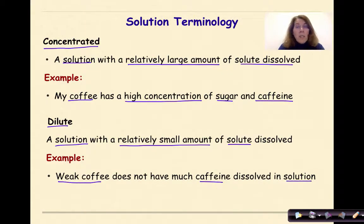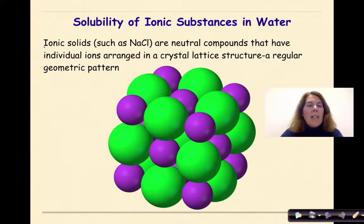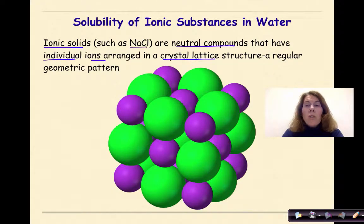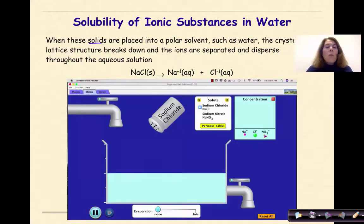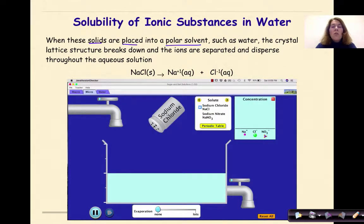Ionic solids such as sodium chloride are neutral compounds with individual ions arranged in a crystal lattice structure — a regular geometric pattern. In the example shown, the green circles represent chloride ions (Cl⁻) and the purple ones represent sodium ions (Na⁺) in a repeating pattern. When these solids are placed into a polar solvent such as water, the crystal lattice breaks down and the ions are separated and dispersed through the aqueous solution — for example, sodium chloride breaking down in water to form Na⁺ and Cl⁻ ions.